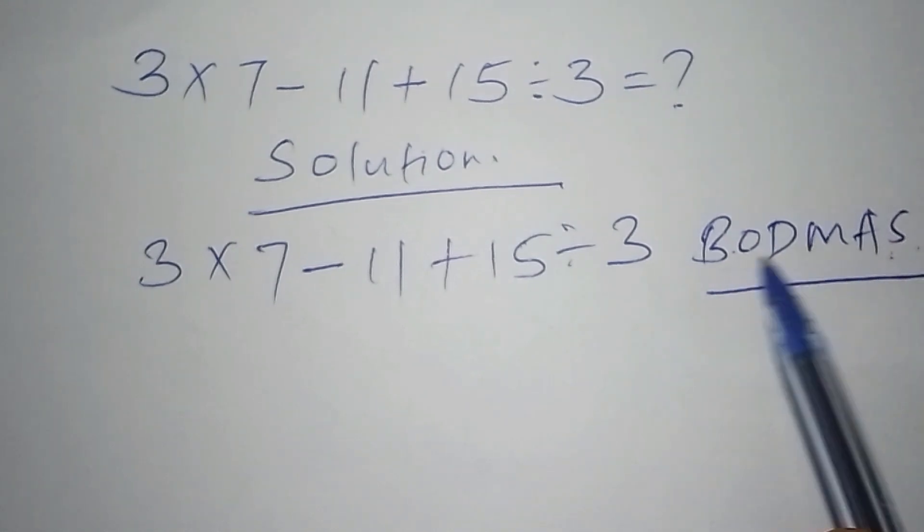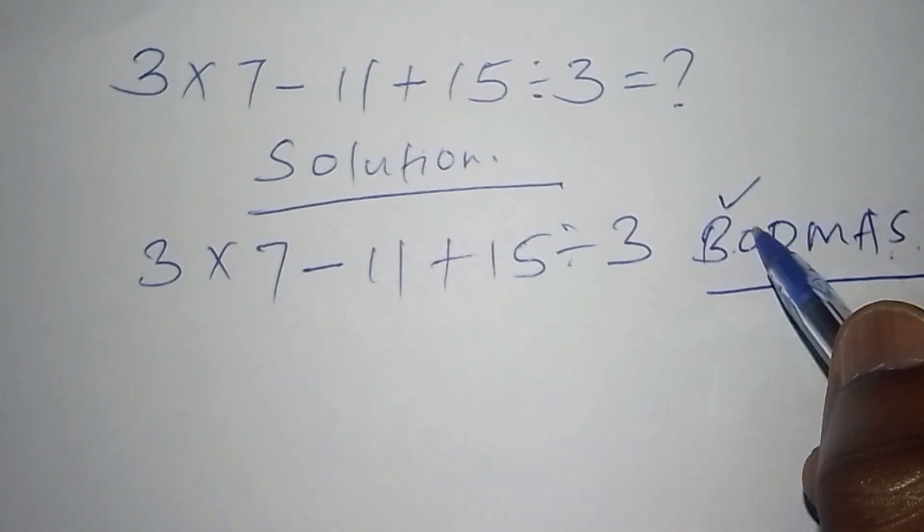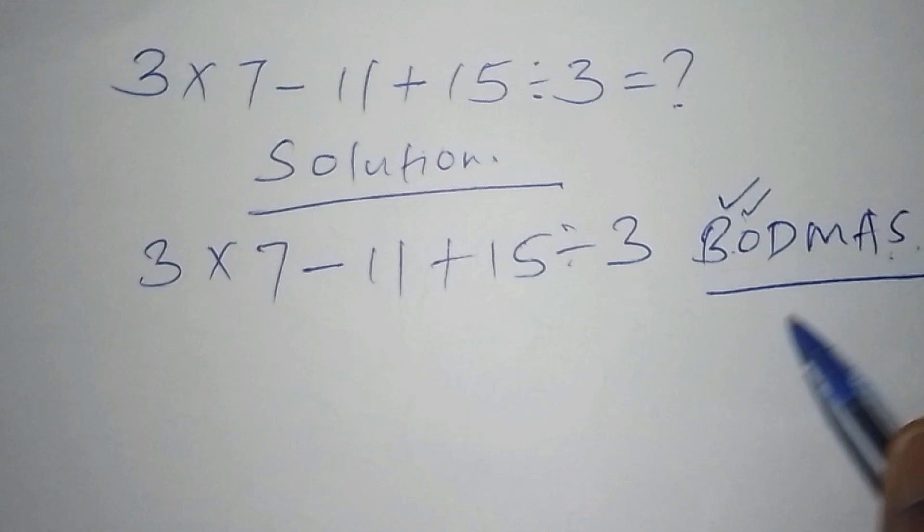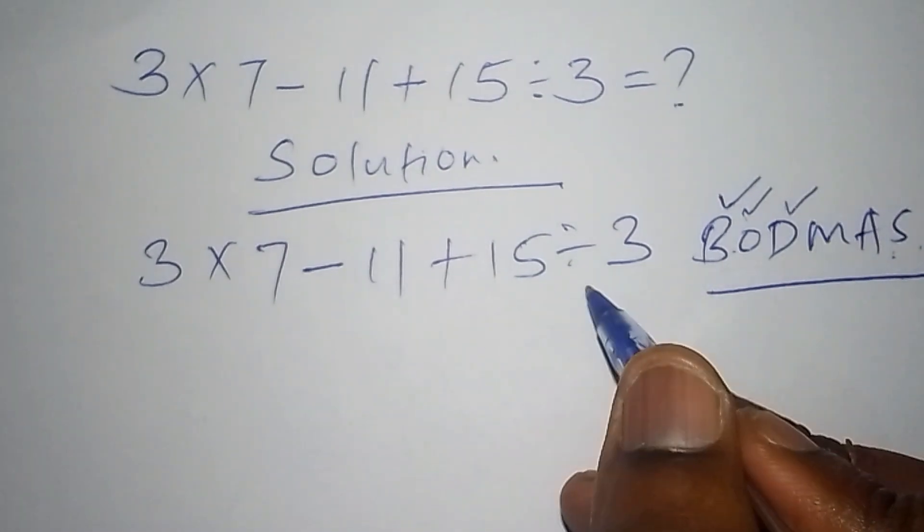B stands for bracket. In our operation, we no longer have the bracket. O stands for of, we don't have of. D stands for division. We need to work out this division first.